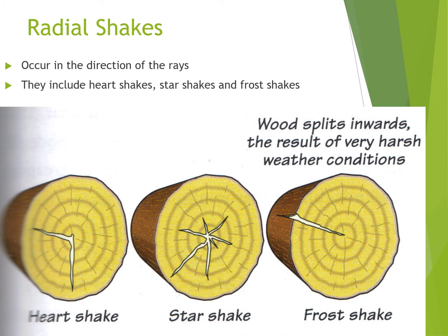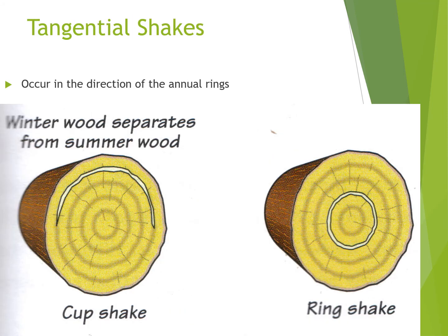Radial shakes, as you can see in this drawing, radiate out from the center of the tree. You've got heart shakes which come from the heart, star shakes which look like a star, and frost shakes which go all the way to the outside — the result of a very harsh weather condition. Tangential shakes occur in the direction of the annual rings, where winter wood separates from the summer wood. You've got a cup shake that looks like a cup and a ring shake that looks like a ring.